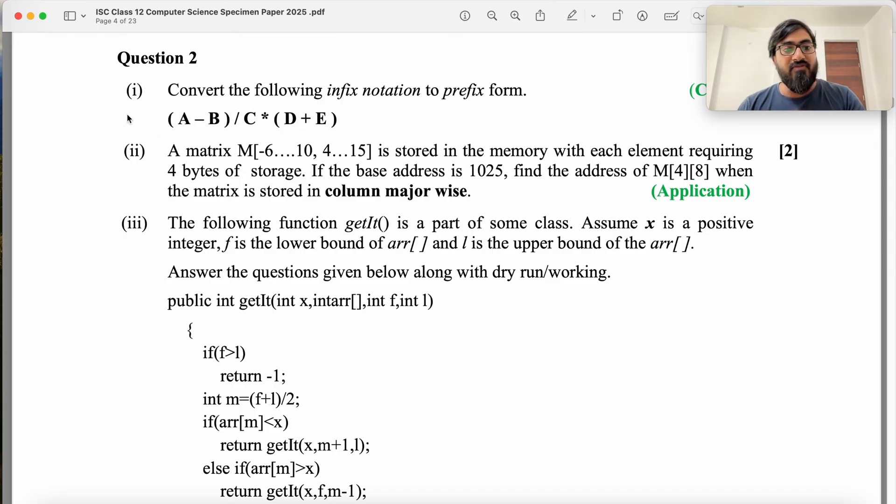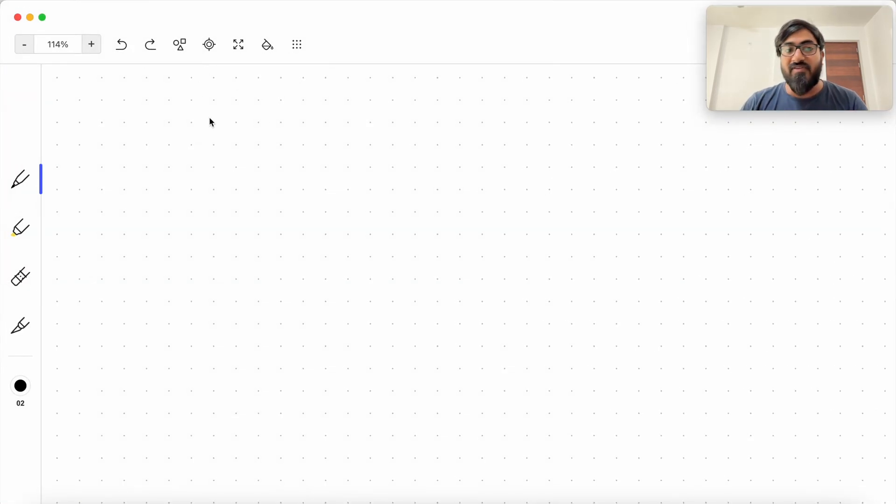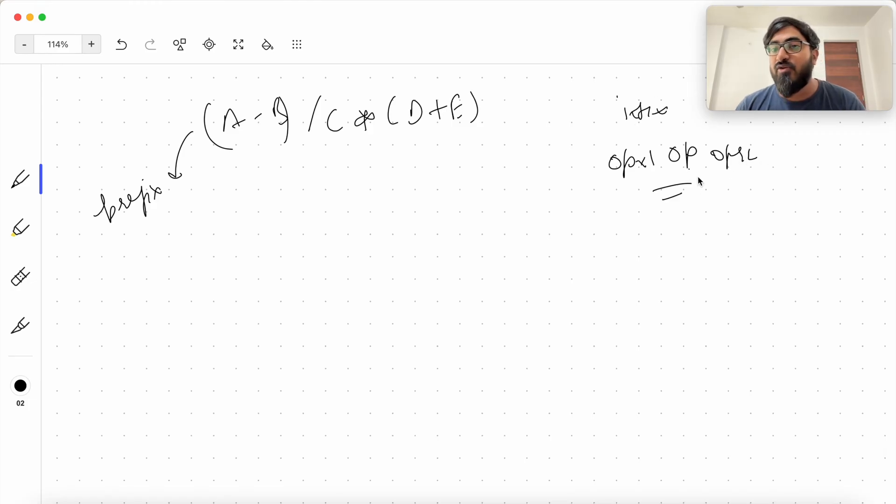So let's begin. You have to do the first part, which is convert the infix to prefix. So this is the equation (A - B) / C * (D + E) that you have been given and you have to convert this to prefix. So there is a long stack method to do this, but I'm going to do this in very short. What we know about infix is operator is between operand 1 and operand 2. Prefix has operator, then operand 1 and then operand 2.